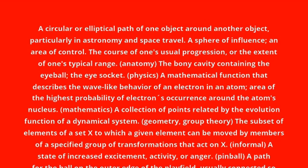Orbit. A circular or elliptical path of one object around another object, particularly in astronomy and space travel. A sphere of influence, an area of control.